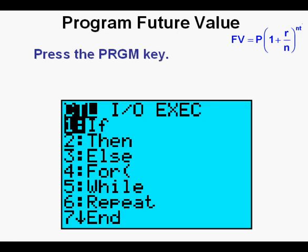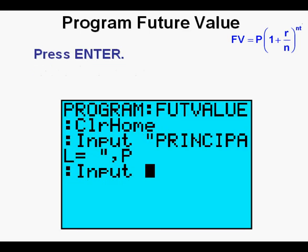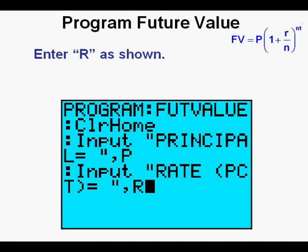Press the program key, arrow once to the right to the input/output submenu, press enter to choose option 1, input. Enter the text as shown — PCT stands for percentage. Remember that you can create an equal sign by pressing the second key, then the math key, then press enter. Enter a comma — the comma key is above the 7 key. Create the letter R by pressing the alpha key, then the times key on the right side of the keypad with the green R above it. Press enter.